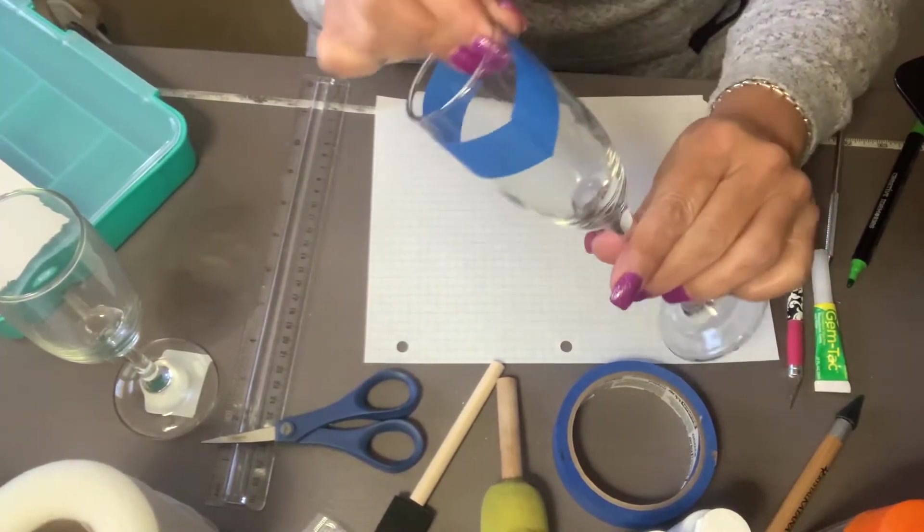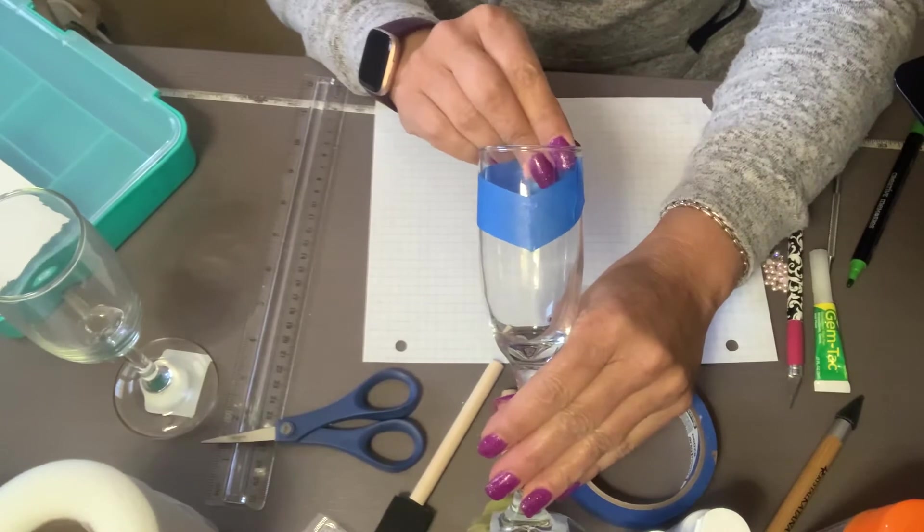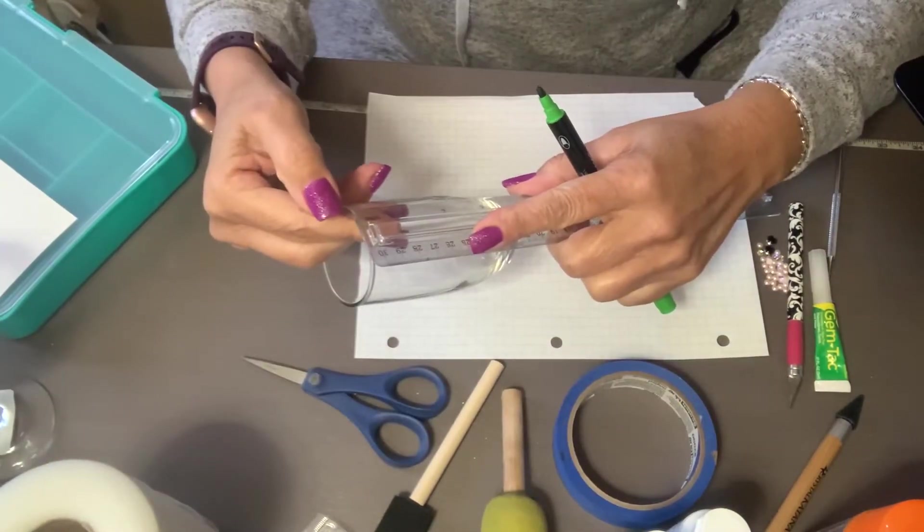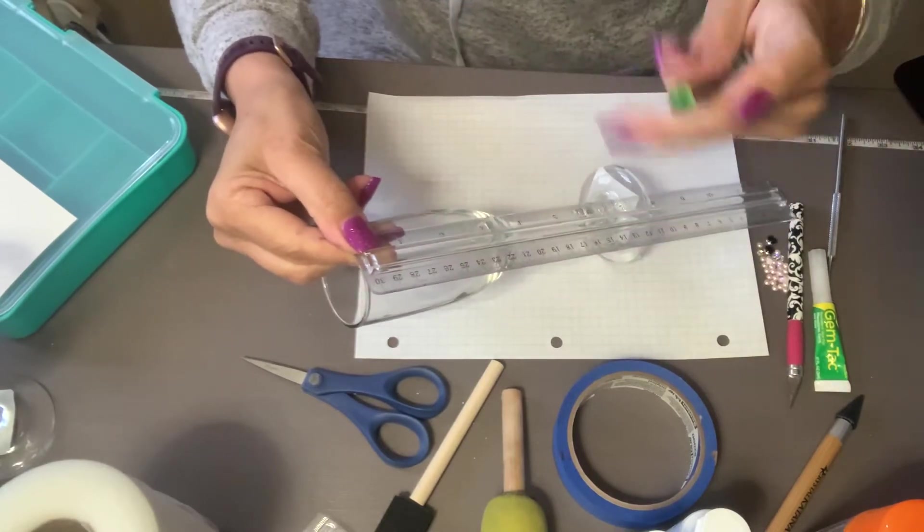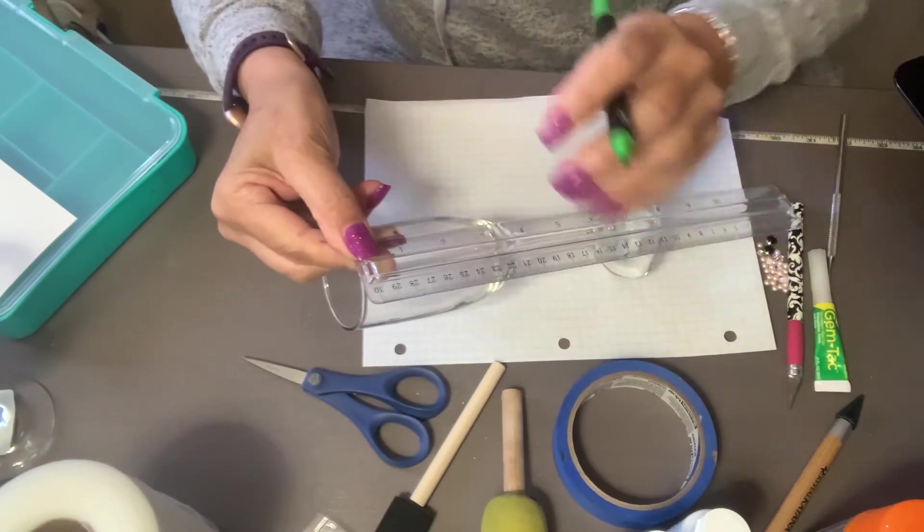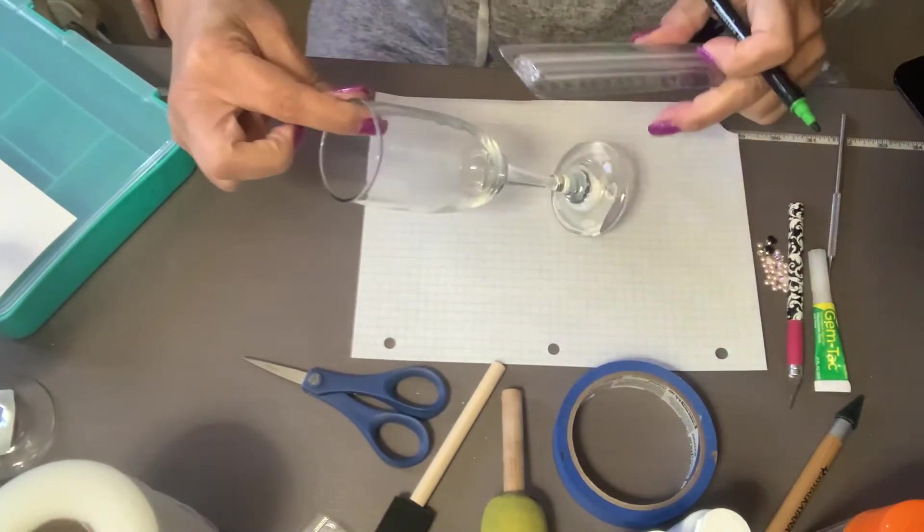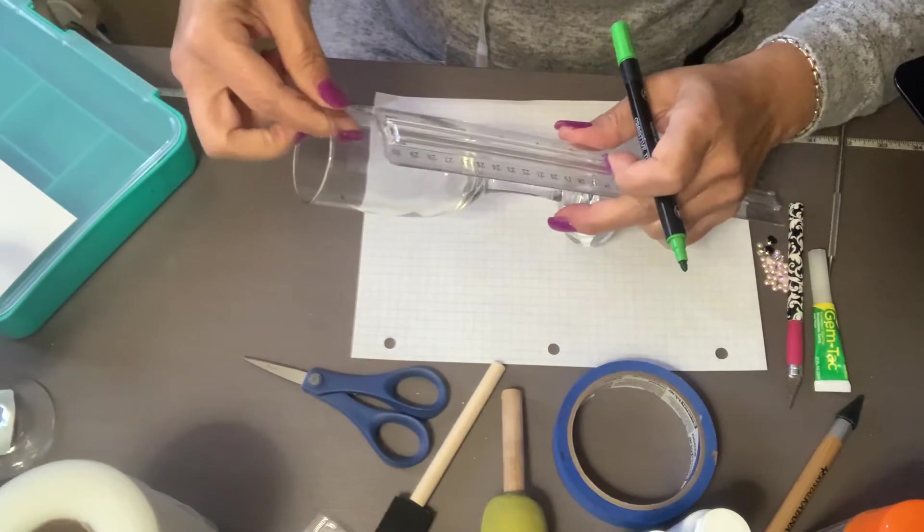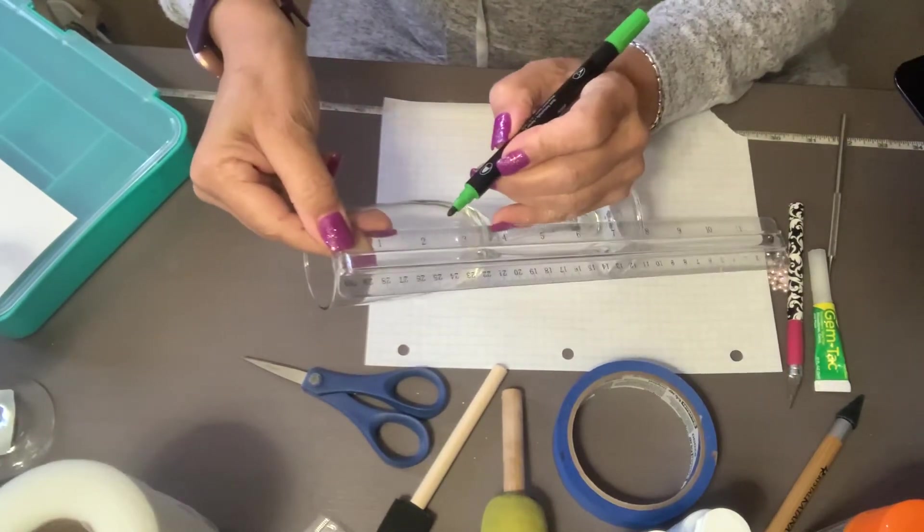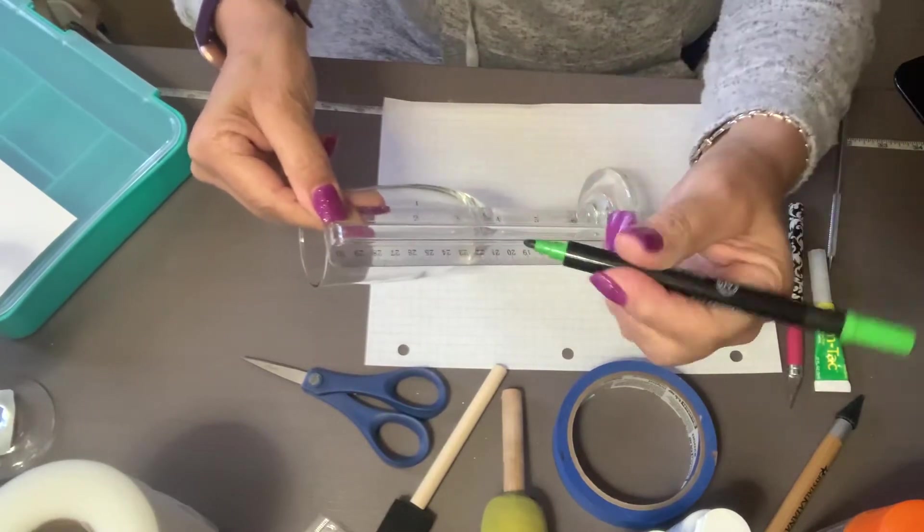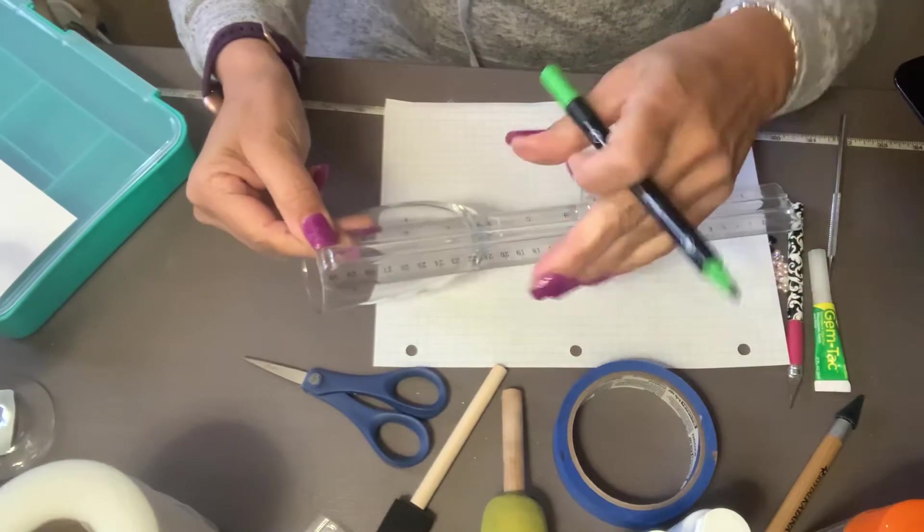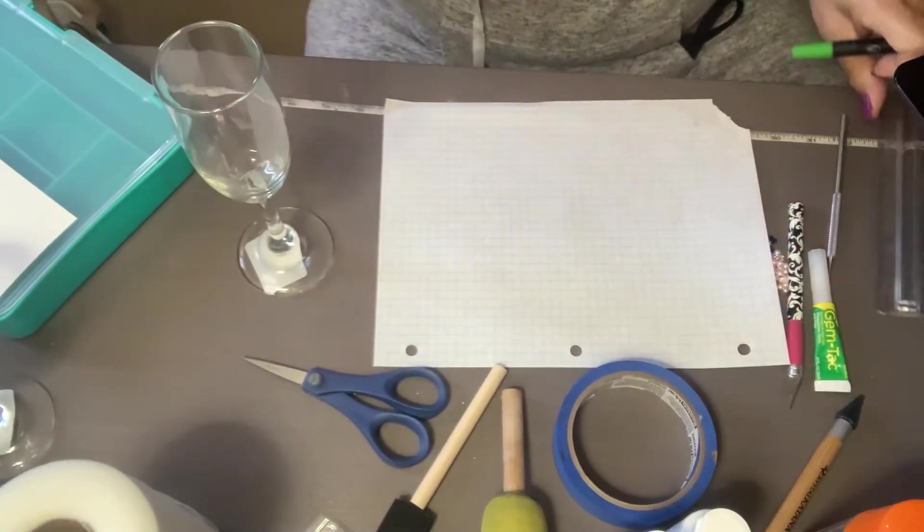Okay, so this is what we're going to be doing with the glass. So you're going to mark at one inch right there, and you're going to go to the opposite side, the opposite, and you're going to do two inches. This is a marker, it's not permanent, you can take it right off for easy removal.